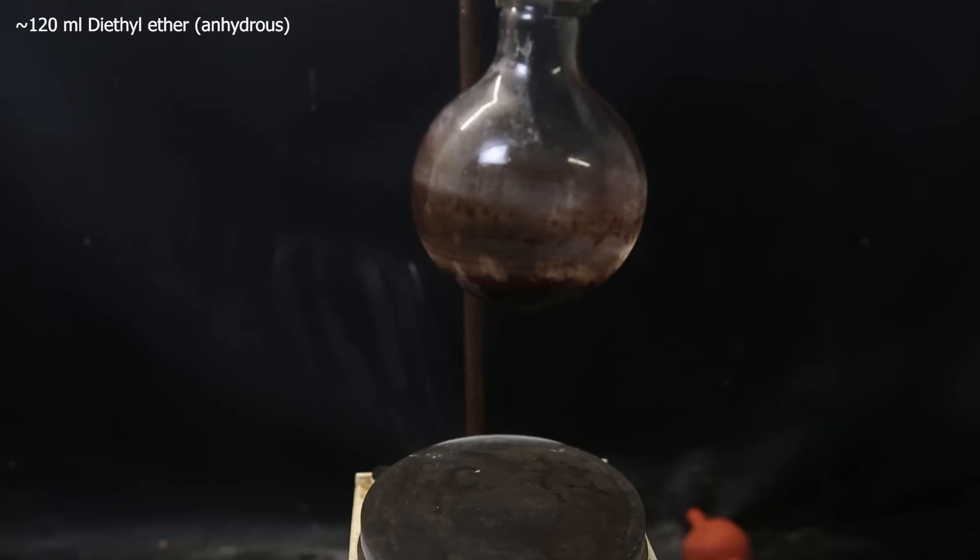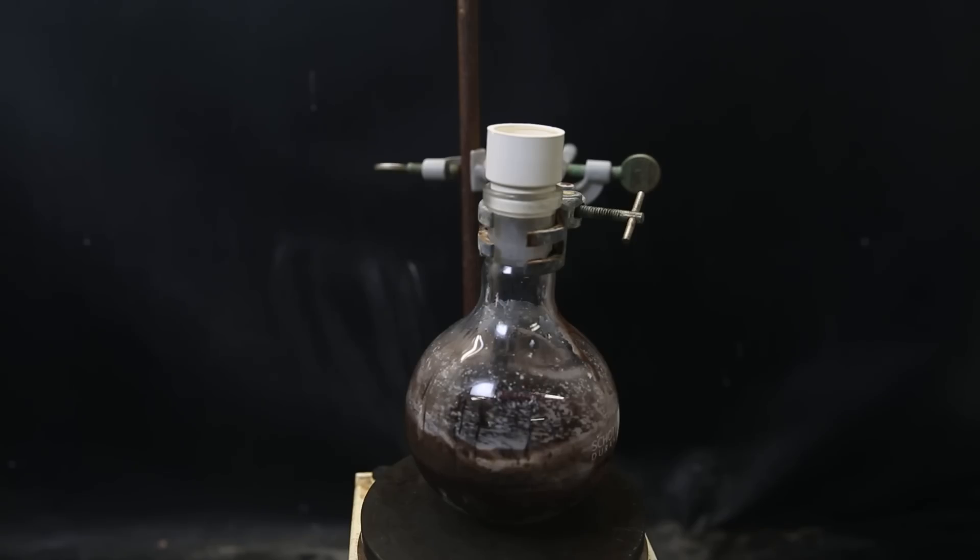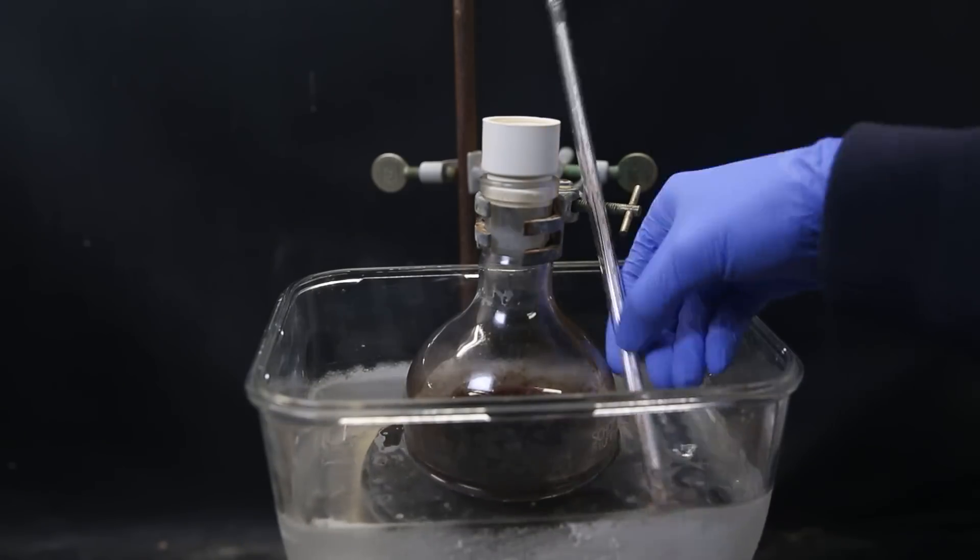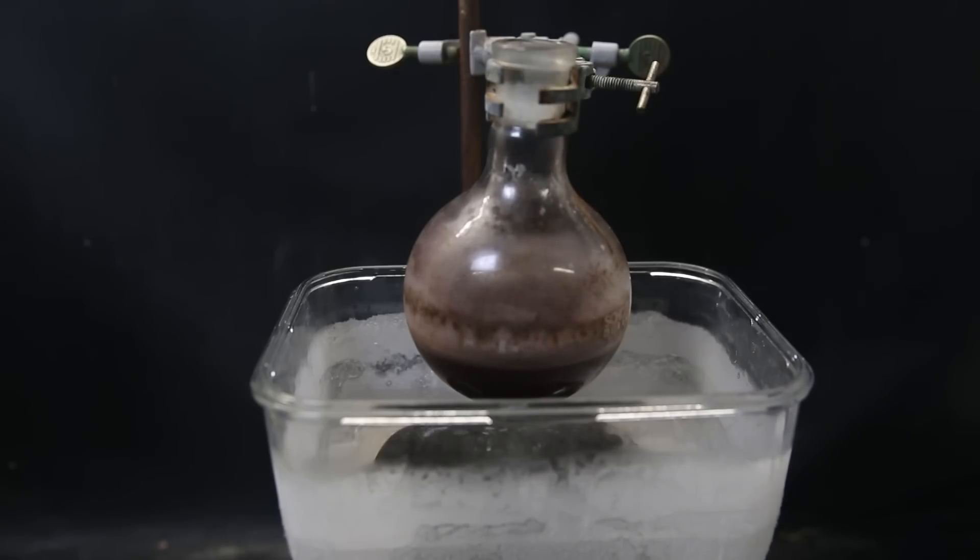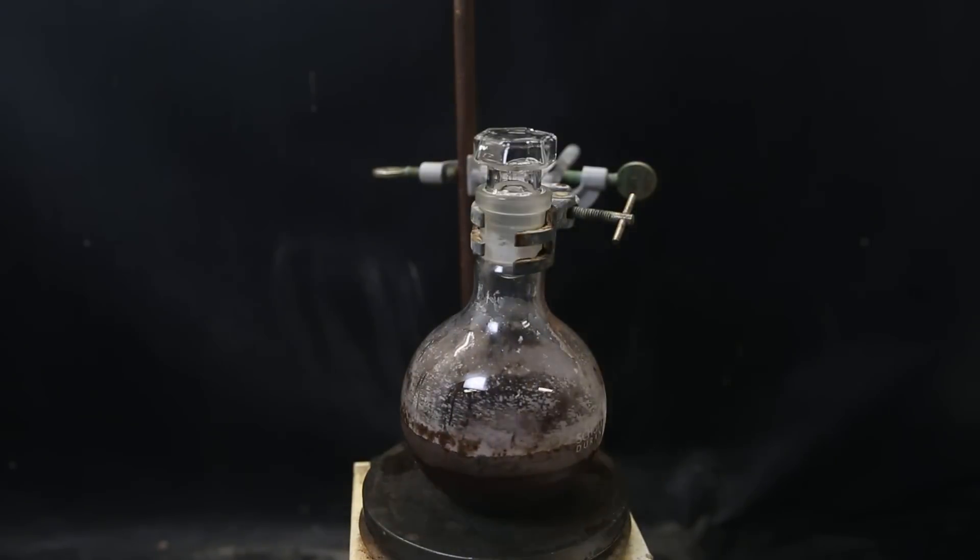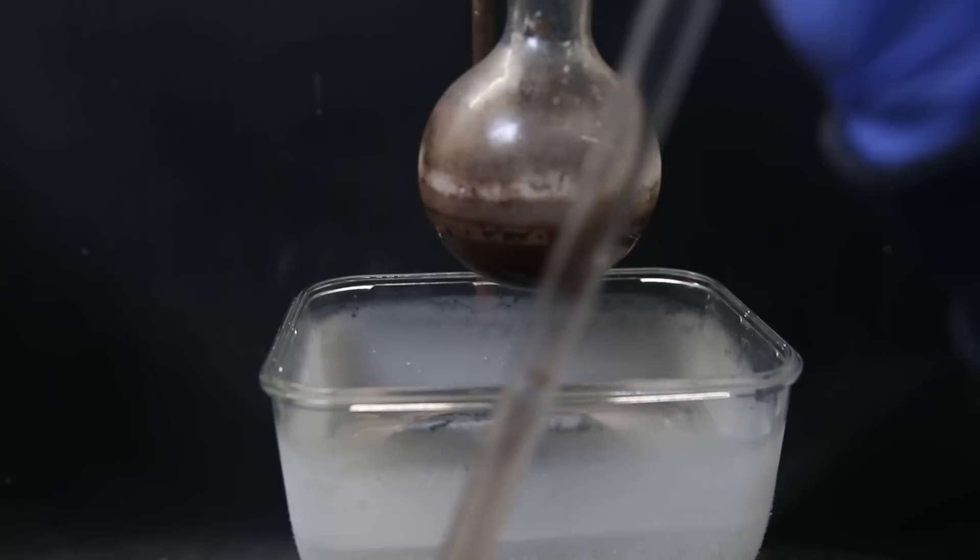When that's done, I again add anhydrous ether, let it stir at room temperature, then move it to the dry ice acetone bath, and repeat the same procedure for a total of three times. This is basically washing it with diethyl ether to remove some impurities while minimizing contact with the air and prevents having to transfer the difficult slurry.